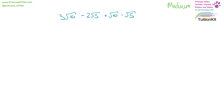3 square root 10 plus square root 10 is 4 square root 10. Minus 2 square root 5 minus square root 5 is minus 3 square root 5. So the answer is 4 square root 10 minus 3 square root 5.